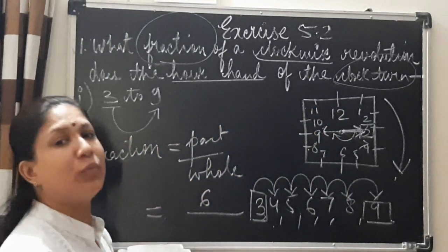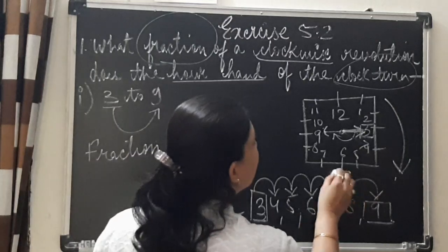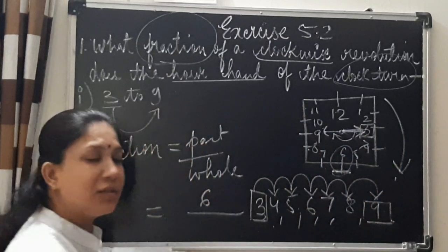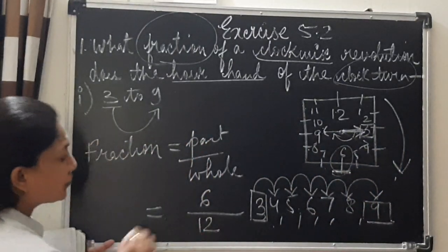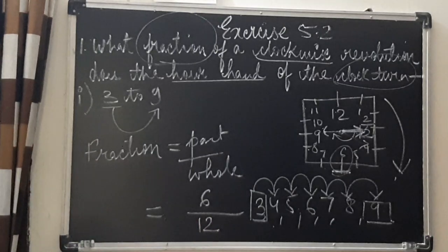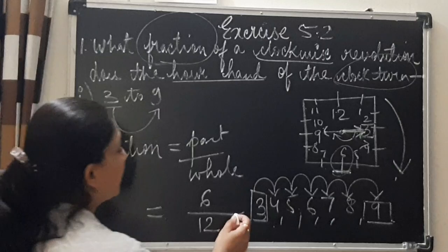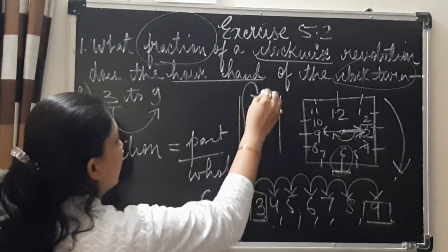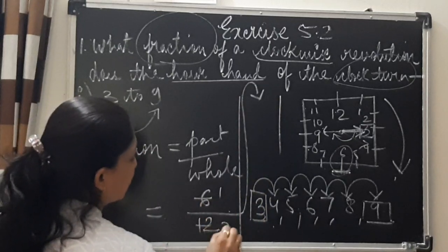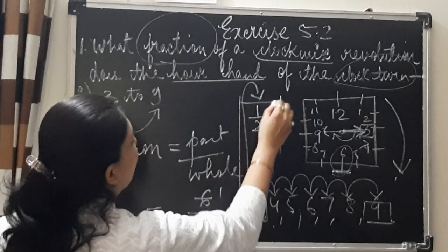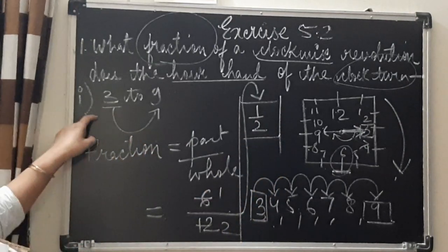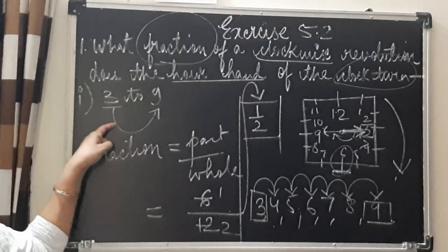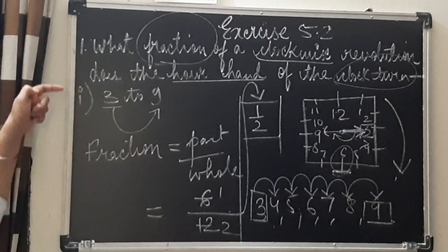On the whole, how many numbers do you have on a clock? 12 numbers — count 1 through 12. So the fraction is 6 by 12. Now simplify: 6 ones are 6, and 6 twos are 12. So the fraction is 1 by 2 when the hour hand moves from 3 to 9 in clockwise direction. This is your first question, first part solution.